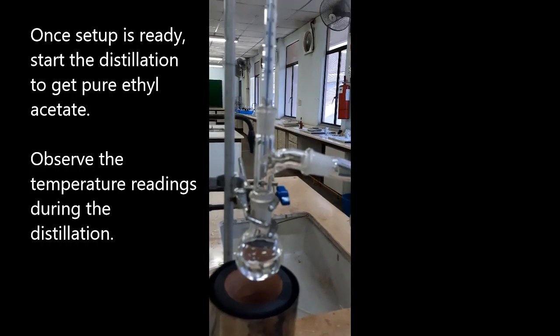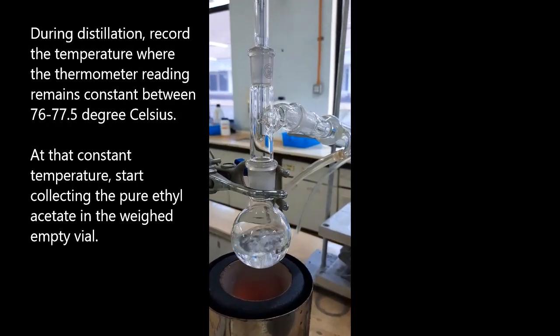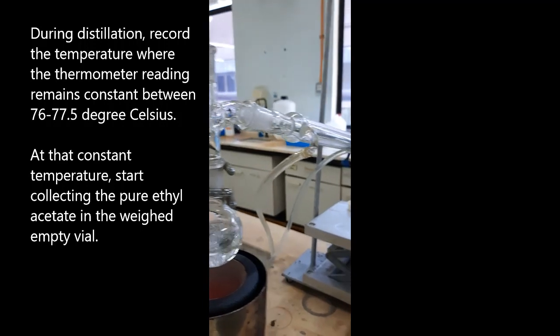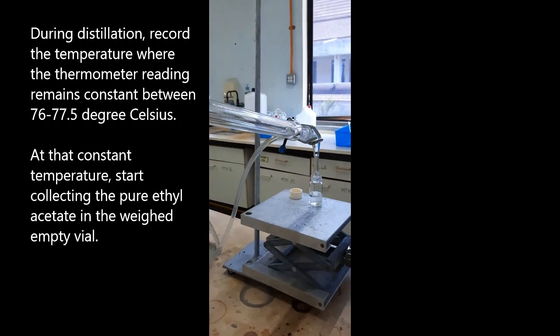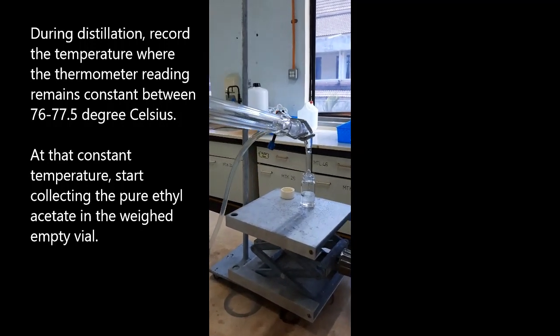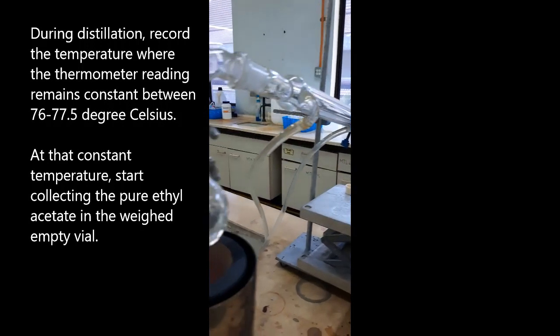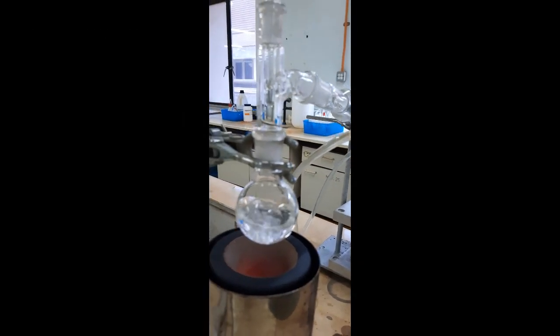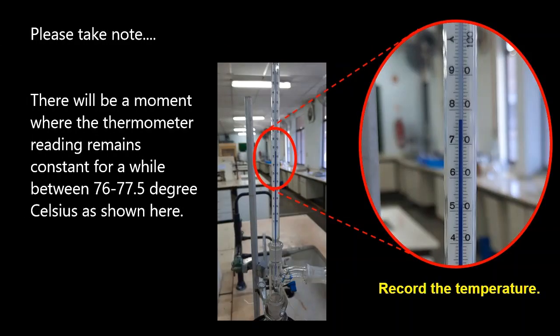During the distillation, record the temperature when the thermometer settles between 76 to 77.5 degrees Celsius. Use a pre-weighed empty vial to collect the condensed ethyl acetate product. Record the boiling point of the liquid when the temperature remains constant as shown here.